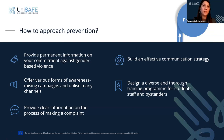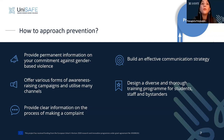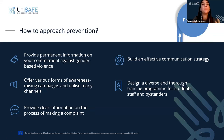In addition to outlining the commitment, institutions should also provide information on the process of making a complaint and ensure that safe channels are in place for individuals to report incidents. Providing permanent information and a safe channel to complain helps create a culture of accountability and transparency. A step-by-step guide on how to build an awareness-raising campaign is available on UNISAFE's website.